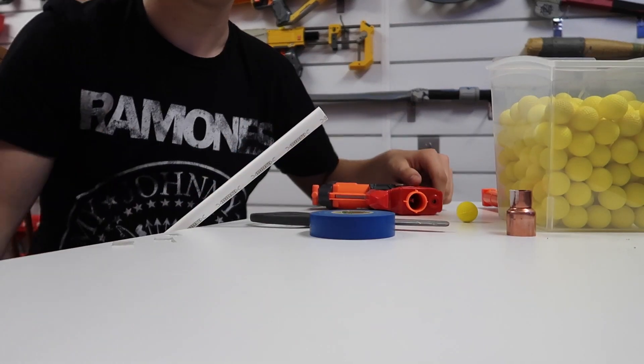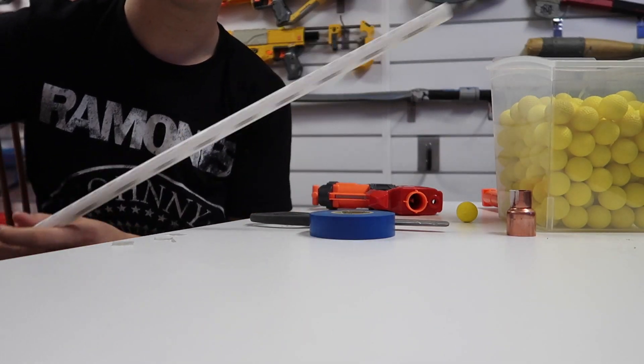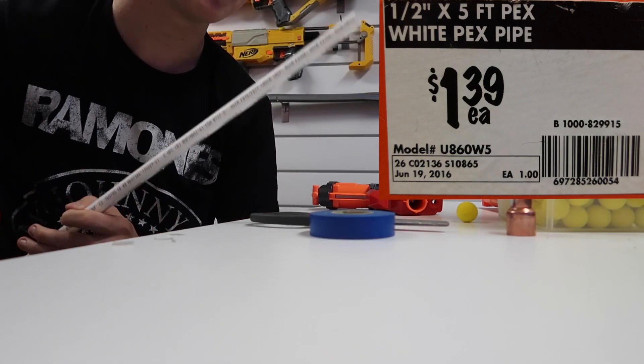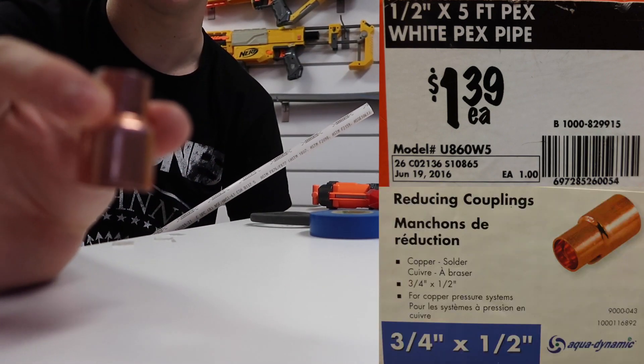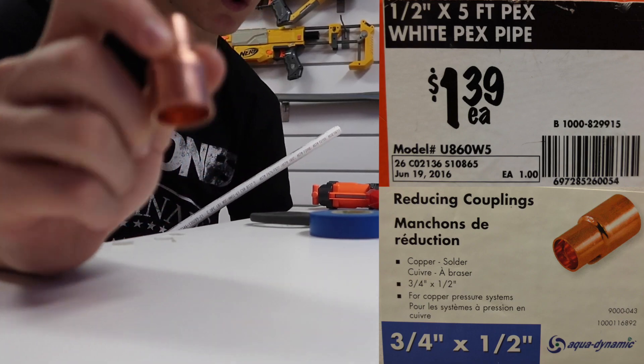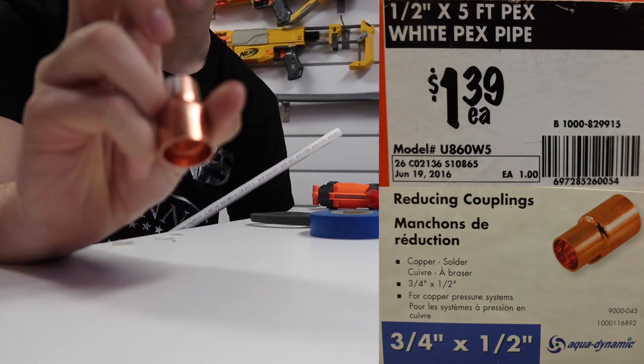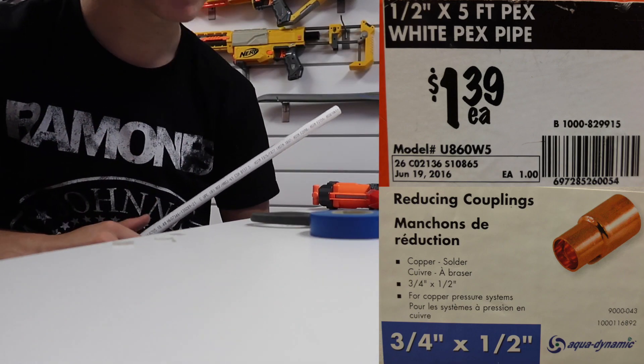Here's what you need. First of all, PEX pipe. I use this stuff all the time, and there's pictures here, so this is the PEX pipe you're going to need, and you're also going to need coupling. This coupling, coupling is the word of the day. This is the one you need, right there. That'll do the trick.